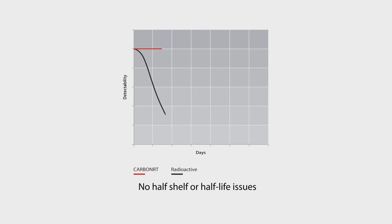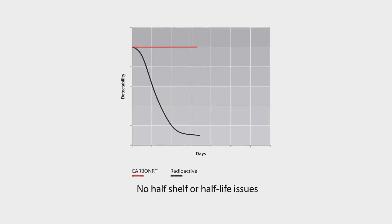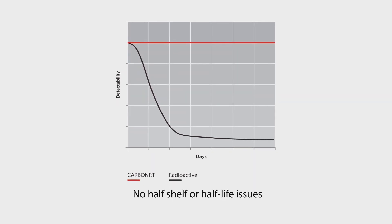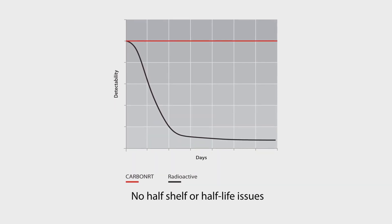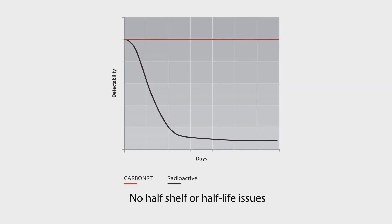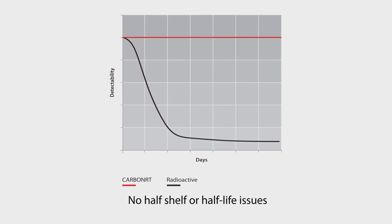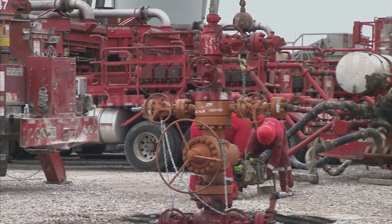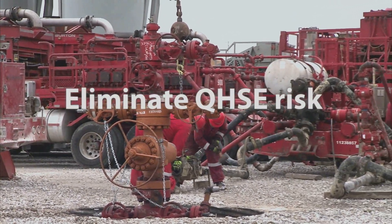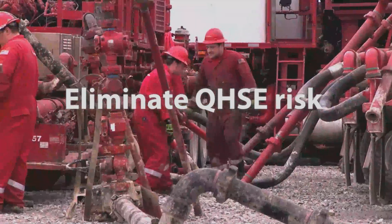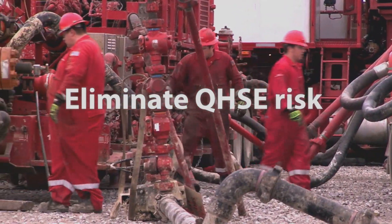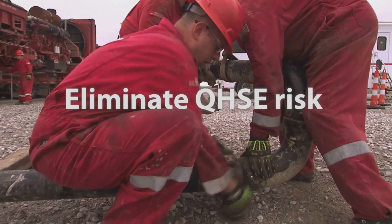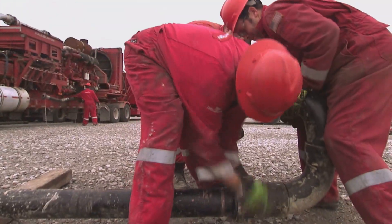CARBO NRT technology is permanently detectable, so evaluations can be performed safely and efficiently at any time during the life of the well, unlike particulate radioactive tracers that are only traceable for a few months due to their half-life, which also means they have a limited shelf life. Propant enhanced with CARBO NRT technology is pumped like any other and requires no special equipment, handling, training, permits, or certifications. That delivers significant cost savings over other evaluation methods.